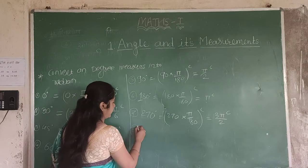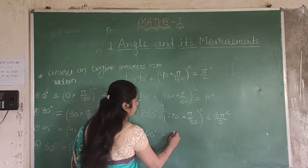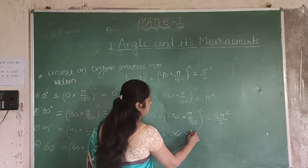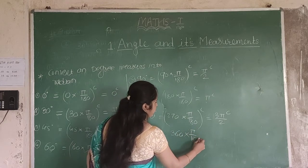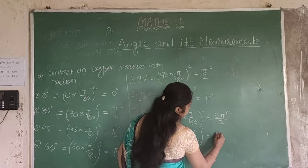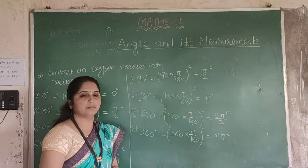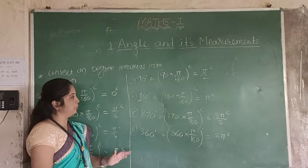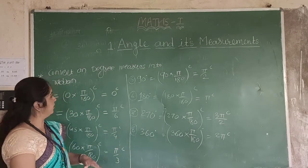And lastly, 360 degrees. Again multiply by pi by 180 and we get the last standard angle: 360 degrees equals 2pi radians.